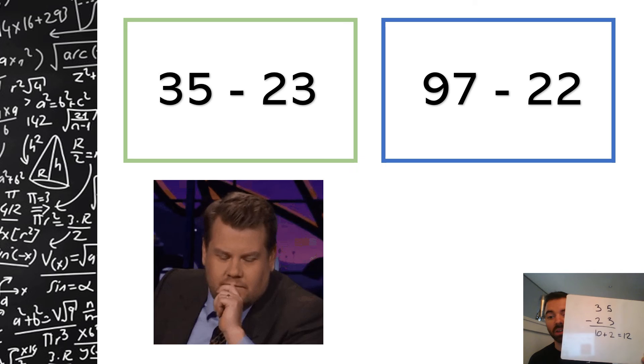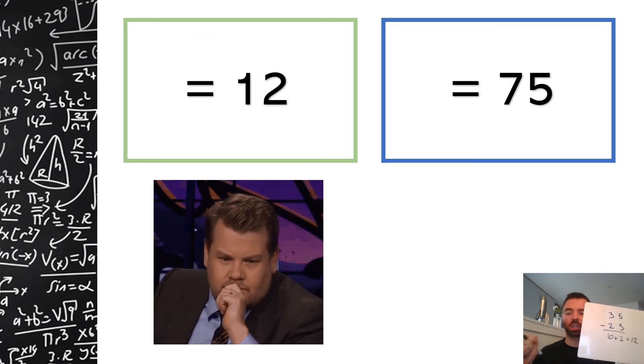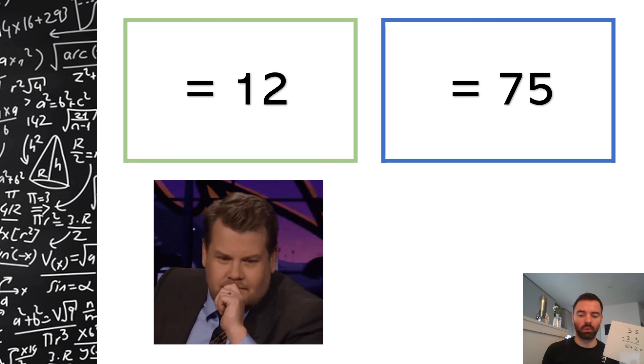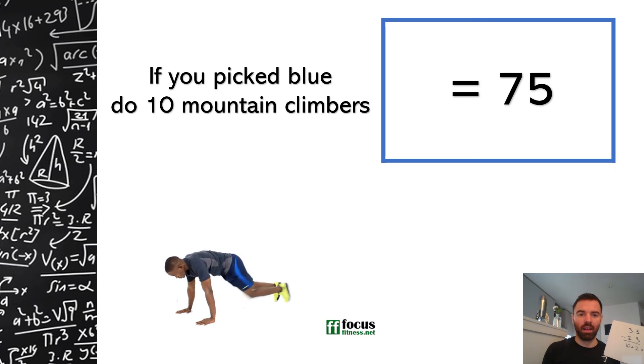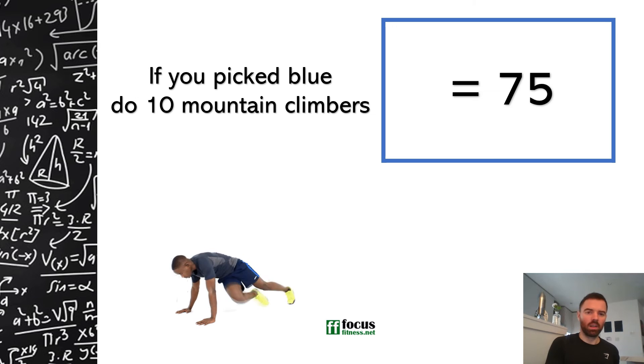I went for the green: I did 35 take away 23, and I got to do what I was meant to do this time. 5 take away 3 is 2, 30 take away 20 is 10. Add those together, you get 12. Happy with that. Right, okay, what do we get? If you pick blue, do 10 mountain climbers. That man's very good at mountain climbers, isn't he? Oh, dancer though! Managed to avoid that, managed to avoid it. Oh, go on then, get going.